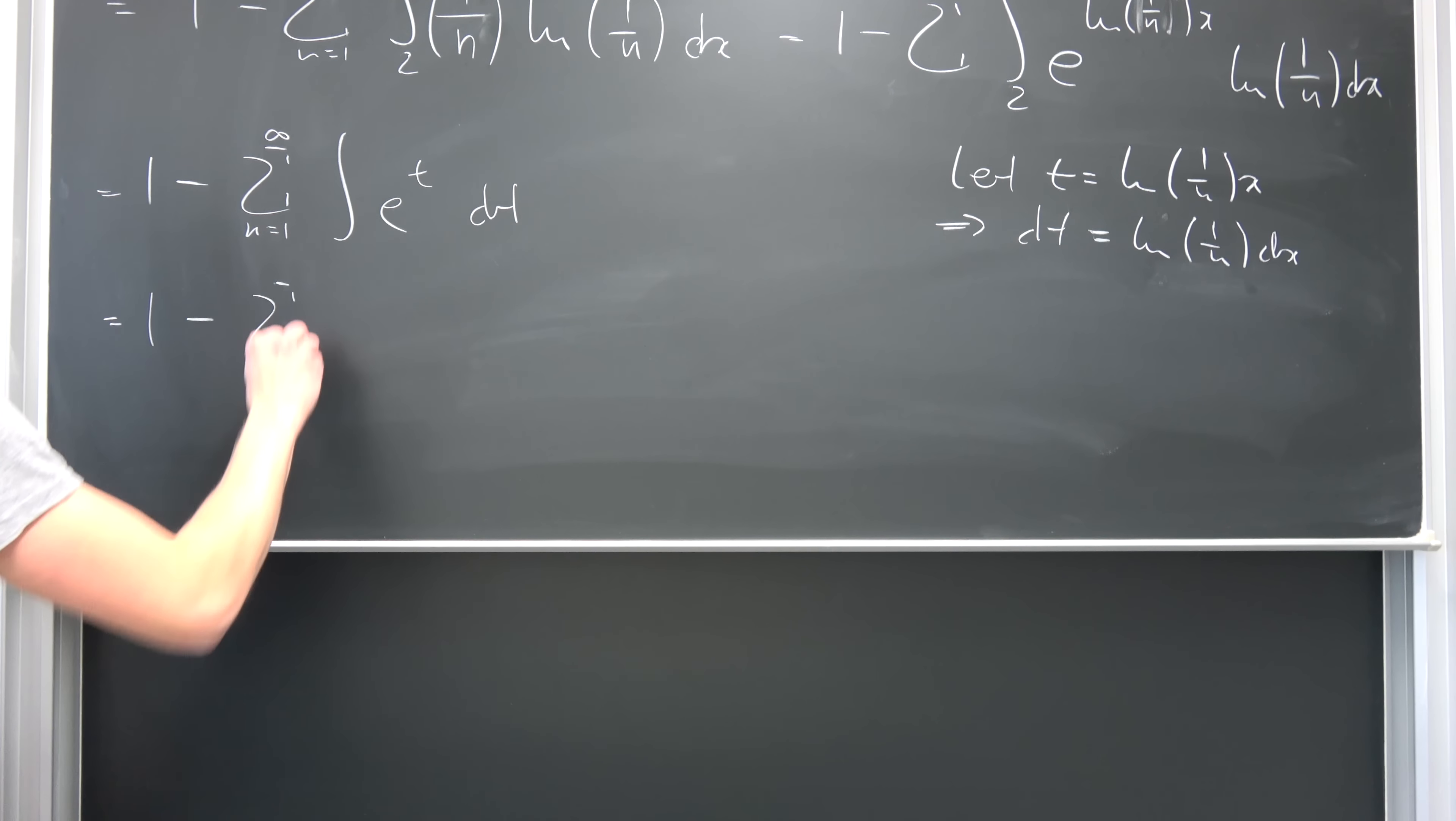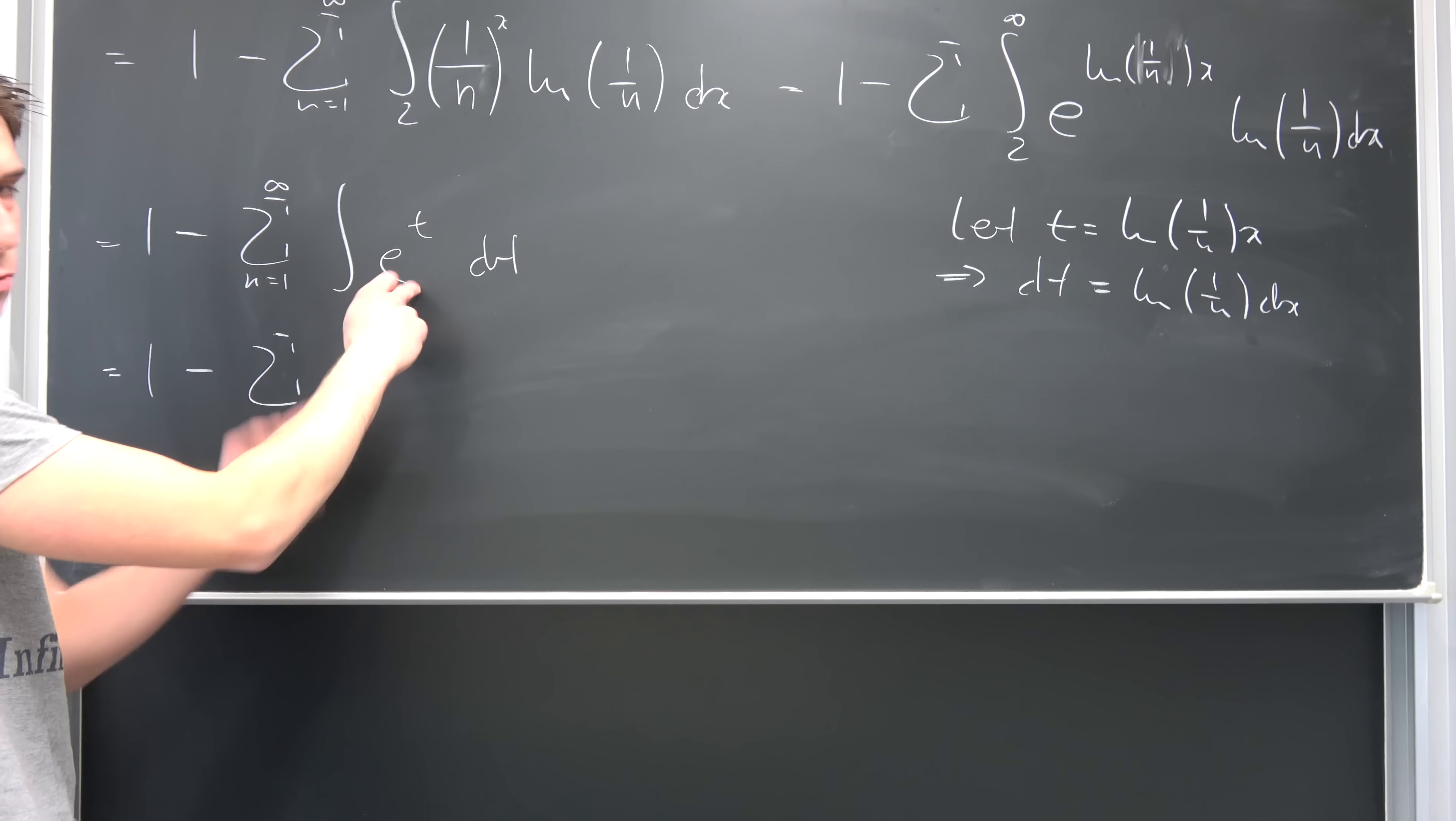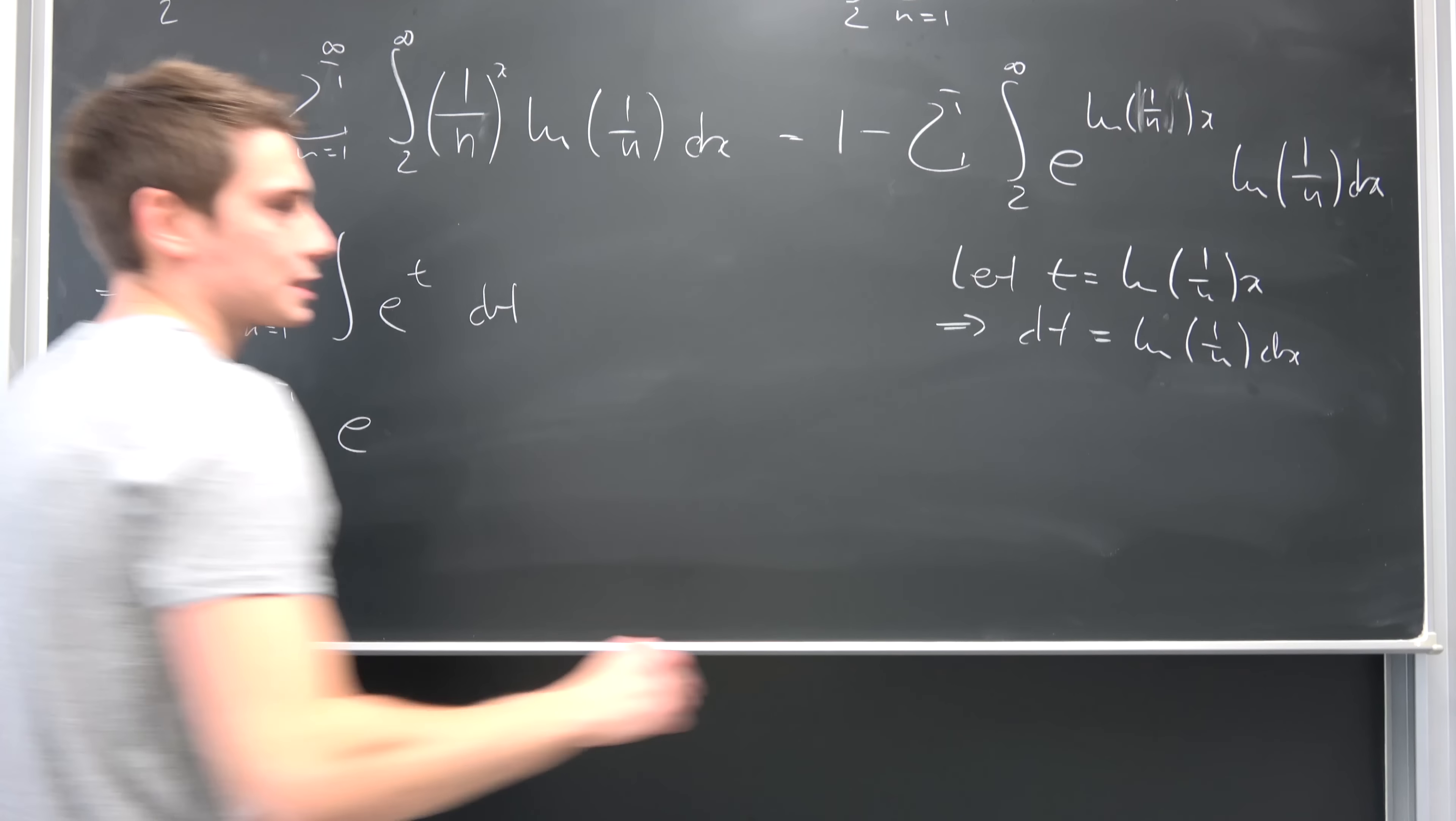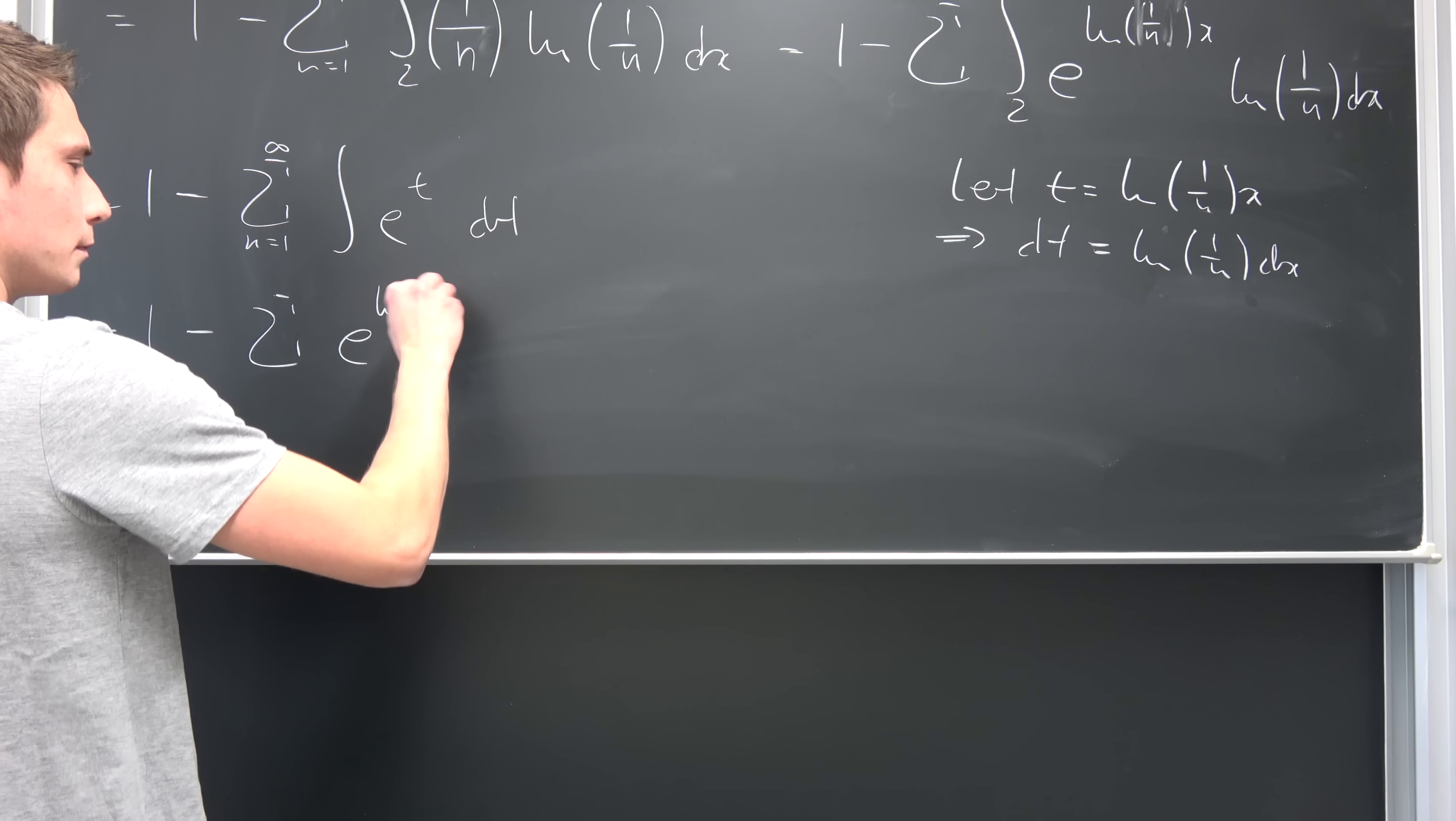So integrating this is really quite easy. This is nothing but 1 minus infinite summation of e to the t, because integral of e to the t is just e to the t. E T... What an alien. But what is t? t is nothing but natural log of 1 over n times x.